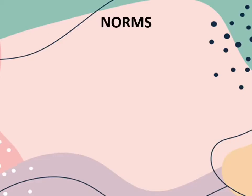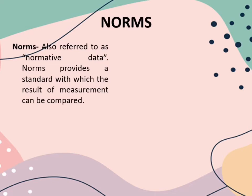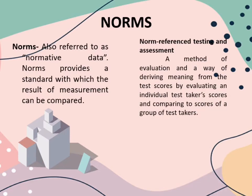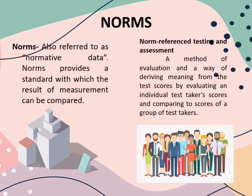Norms, also referred to as normative data, provide a standard with which the results of a measurement can be compared. Norms typically represent the average score — the most common score among all individuals who took a specific test. For example, the average IQ considered is 100, so if your IQ is higher, say 110, it means you surpassed a large number of individuals who fall at the average. Norm-referenced testing is a method of evaluation that derives meaning from test scores by comparing an individual's score to scores of a group. A common goal is to yield information on a test taker's standing relative to a comparison group.